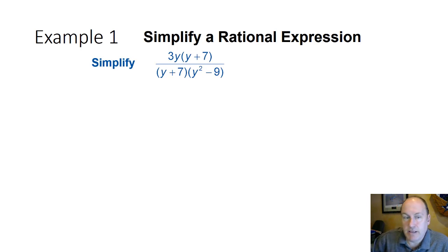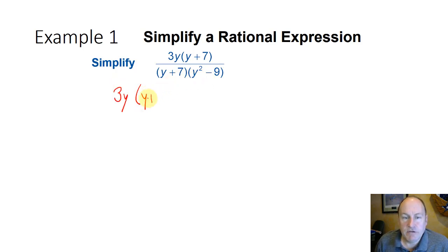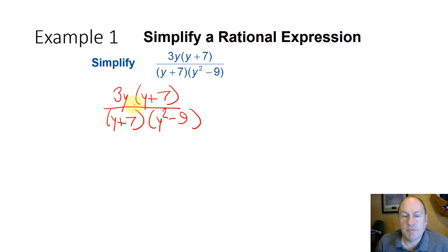Let's take a rational expression — it's called that because it can be written as a ratio. We have 3y times (y plus 7), all divided by (y plus 7) times (y squared minus 9). We look for what the numerator and denominator have in common. In this case, they both have a (y plus 7), so (y plus 7) divided by (y plus 7) cancels out, leaving 3y over y squared minus 9.